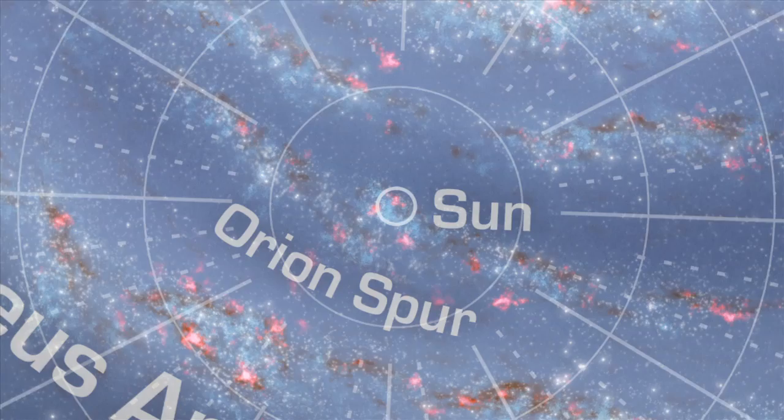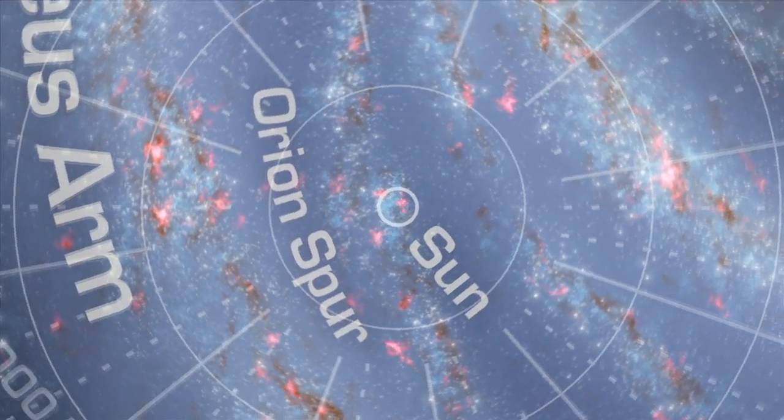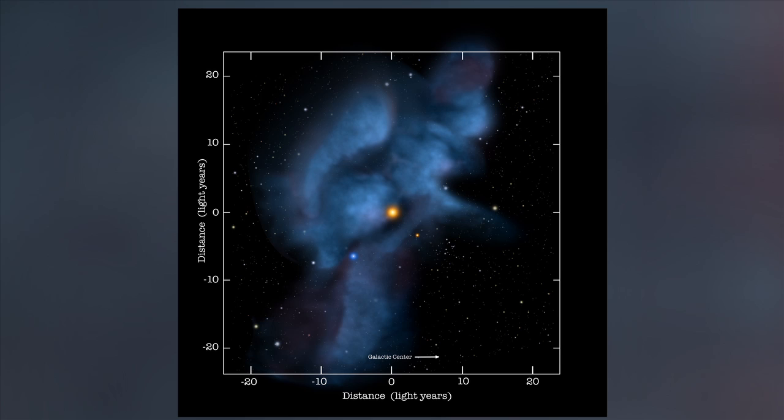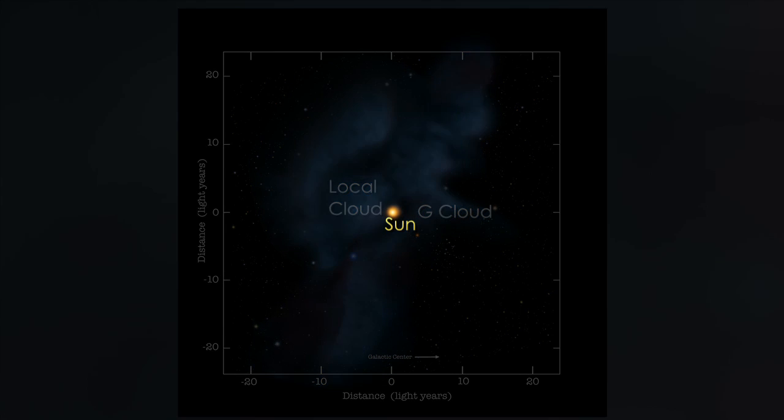These direct physical measurements of the universe right on the sun's doorstep help us understand the history and future of our solar system and the galaxy. What scientists learn can help protect human spaceflight and teach us more about our home in the Milky Way.